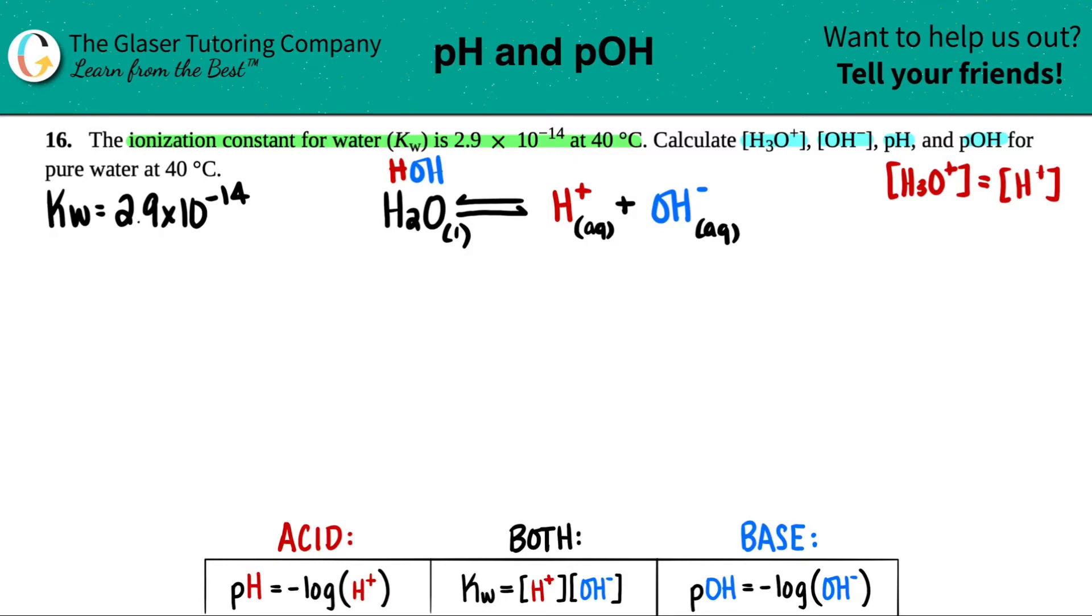That's one of the reasons why your Kw formula does not have water in it, because remember when we did last chapter with all those K values, only aqueous and gases are allowed, no liquids. Now we just have to find out how much H3O+ do I have and how much OH- do I have.